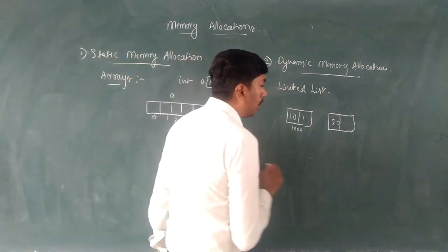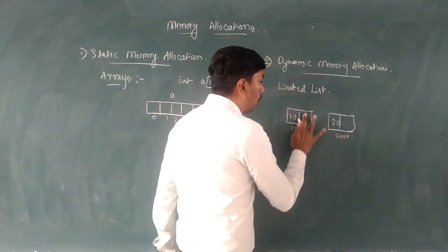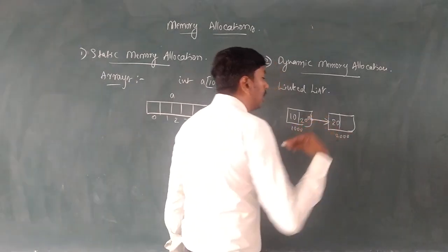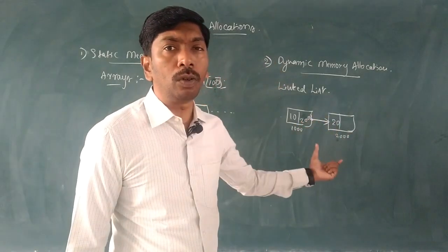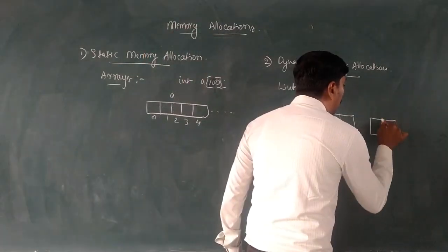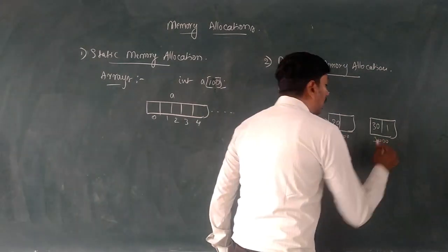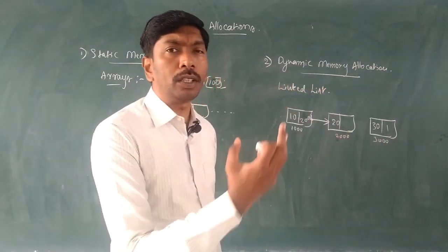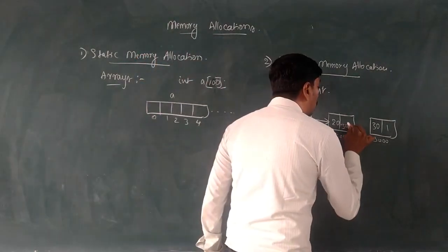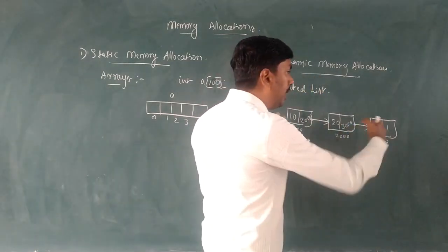For example, one node is created at address 1000, another node at address 2000. We store the address 2000 in the first node to create a link between them. If we create another node with value 30 at address 3000, we store 3000 in the second node. That is how a linked list works - each node is linked by storing the next node's address.